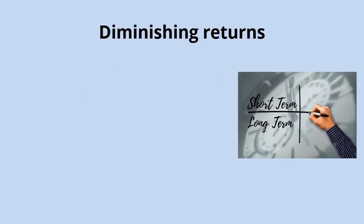This video is about the law of diminishing returns and returns to scale. A reminder first of all that the difference between the short run and the long run in economics is not about the time period that's elapsed, but about the variability of the factors of production. In the short run, at least one of a firm's factors of production is fixed.